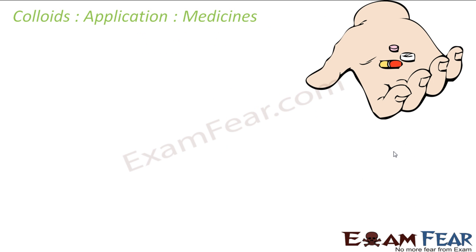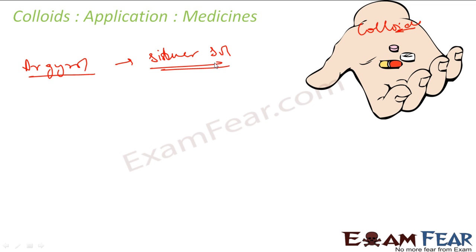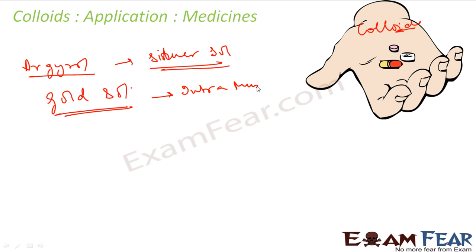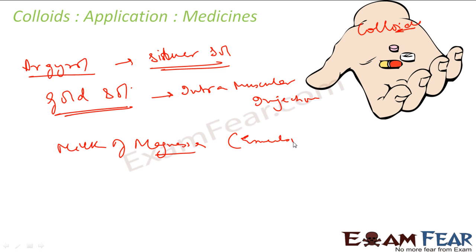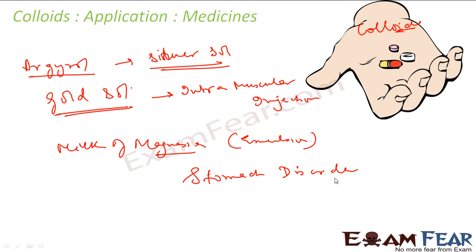Most medicines are colloidal in nature. For example, argyrol is a silver salt used as an eye lotion, and many silver salts on the market are used to treat cancer. Gold salts are used for intramuscular injections. Milk of magnesia is an emulsion used for stomach disorders. Most of the medicines you see around you are colloidal in nature.